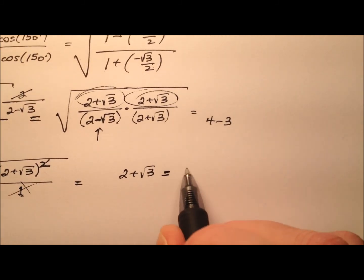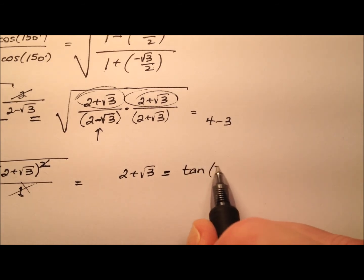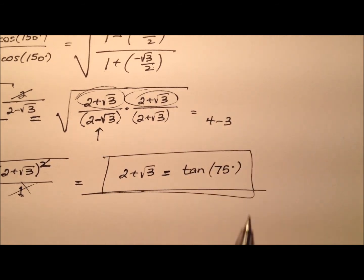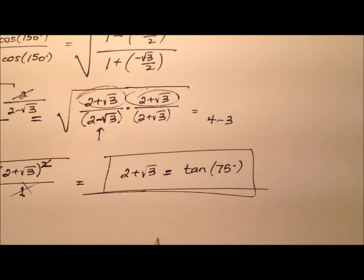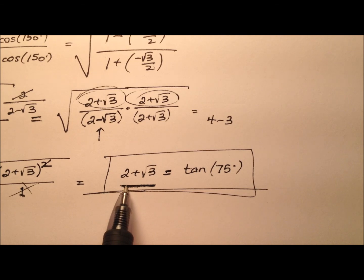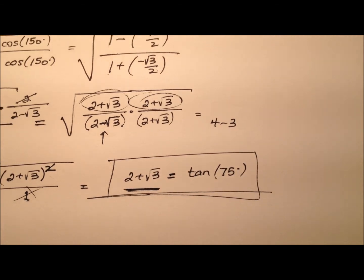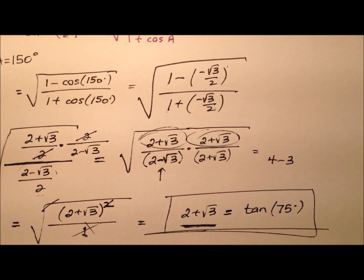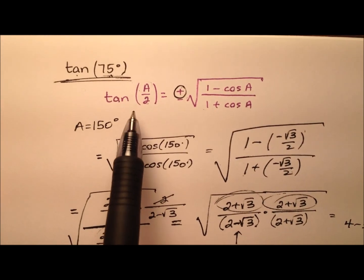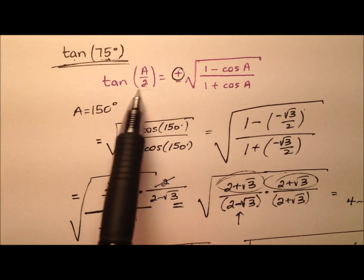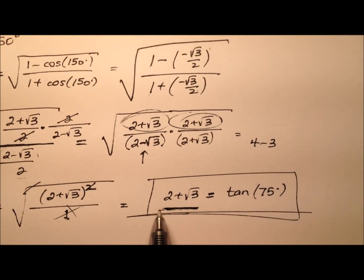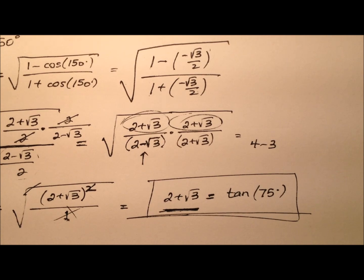So 2 plus the square root of 3 is the exact value for the tangent of 75 degrees. From the first part of this problem, the exact value was also 2 plus the square root of 3. We just saw two ways to get this value: one using the sum identity for tangent, and one using the half-angle identity for tangent — both yielding 2 plus the square root of 3.